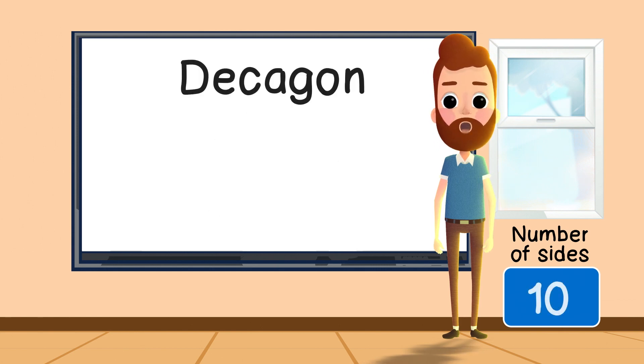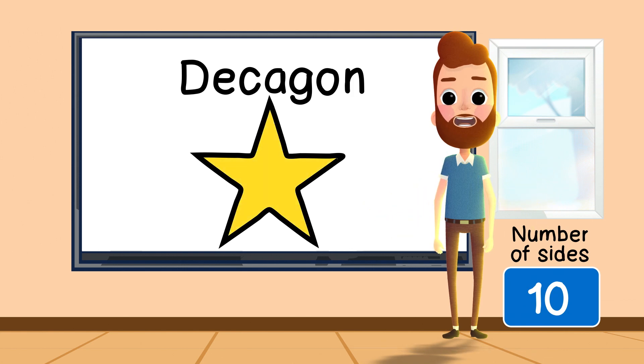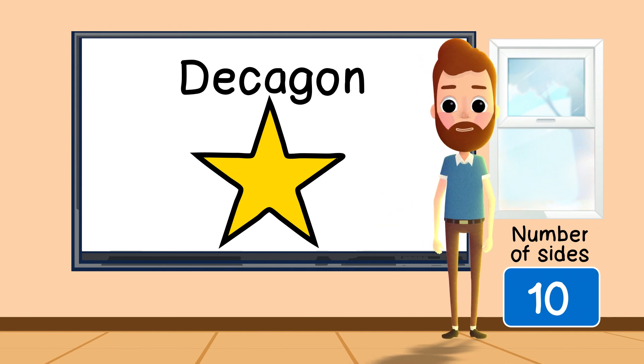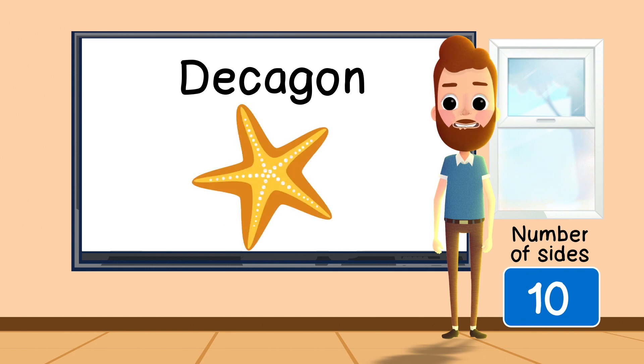And finally, a ten-sided shape is called a decagon. Side one, side two, side three, side four, side five, side six, side seven, side eight, side nine, and side ten. A good example of a decagon is a starfish.